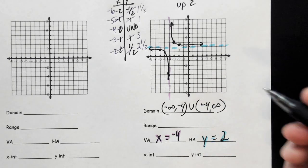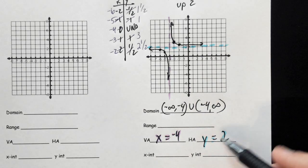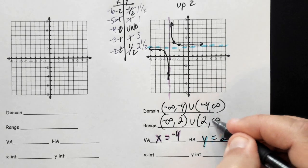And the range is going to apply with the horizontal asymptote. The one y value it can't be is two, so it's negative infinity to two, union, two to infinity.